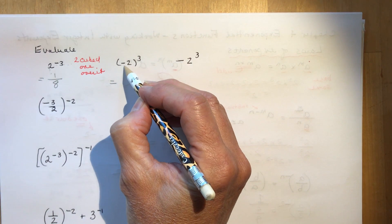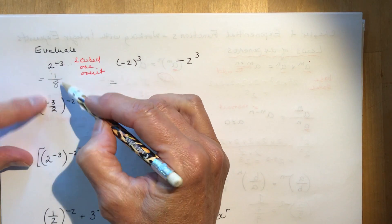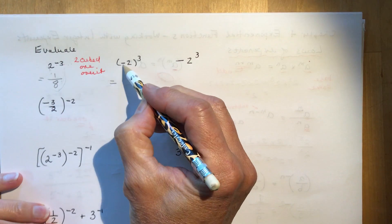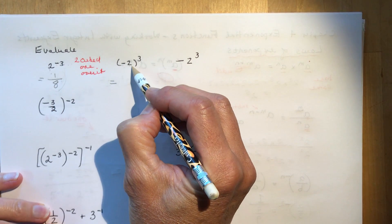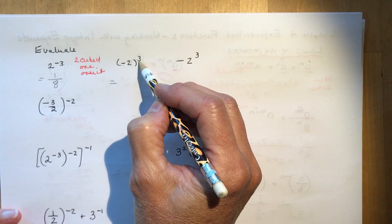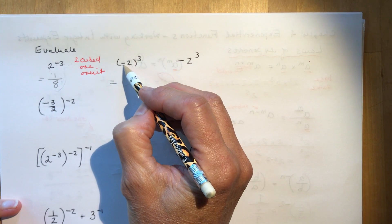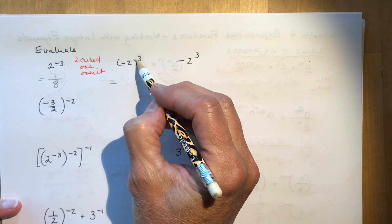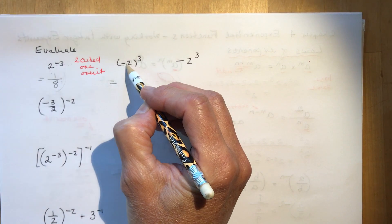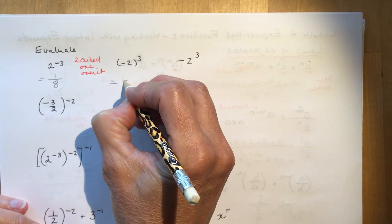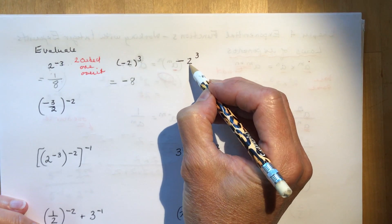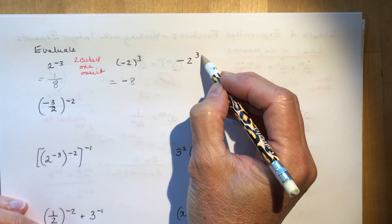It's very important to recognize that a negative exponent does not mean a negative number. The answer here was one eighth — nothing negative about one eighth. However, minus two to the power of three means minus two times minus two times minus two. When the exponent is odd and you're multiplying a negative number, your answer will be negative, because a negative times a negative times a negative is a negative. So the answer is negative eight.